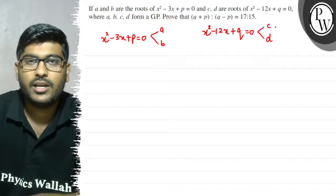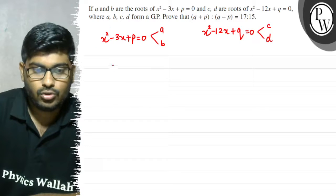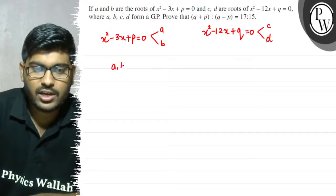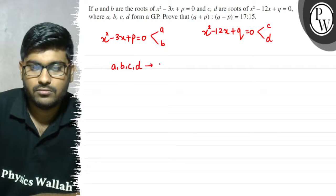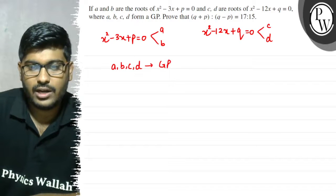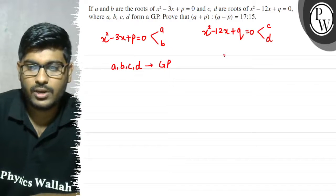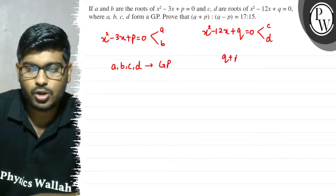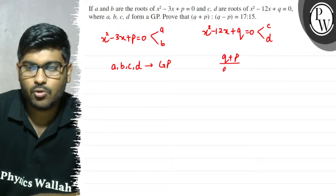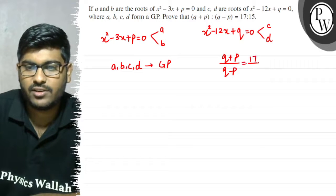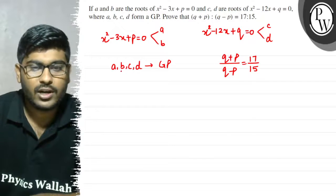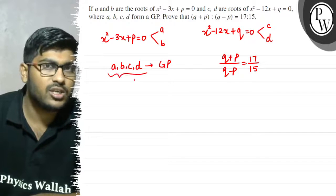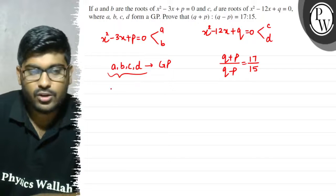So c and d are the roots of the second equation. The other thing we are given is that a, b, c, d are in GP. So what we have to prove is q plus p upon q minus p equals 17 upon 15. We have to prove that if a, b, c, d is in GP.